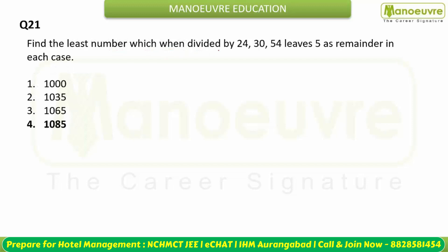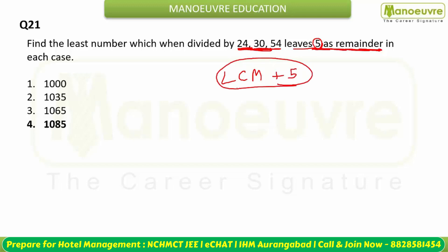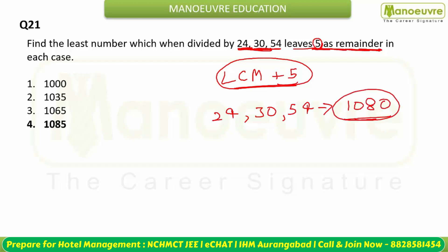Find the least number which, when divided by 24, 30, and 54, leaves a remainder of 5. First find the LCM of 24, 30, and 54, which is 1080. Since we need remainder 5, add 5 to the LCM: 1080 + 5 = 1085. Option D is your answer.